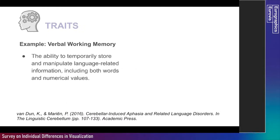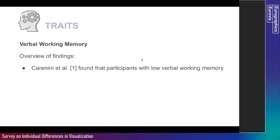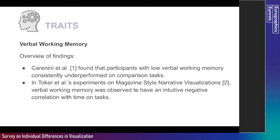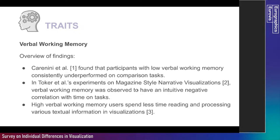Another example is verbal working memory, defined as the ability to temporarily store and manipulate language-related information including both words and numerical values. Key findings include that participants with low verbal working memory consistently underperform on comparison tasks, and the reverse is true as well. Verbal working memory was also observed to have an intuitive negative correlation with time on tasks — high verbal working memory users spend less time reading and processing textual information in visualizations. Essentially, people with high verbal working memory process textual information faster, which greatly facilitates their use of data visualization to complete tasks.